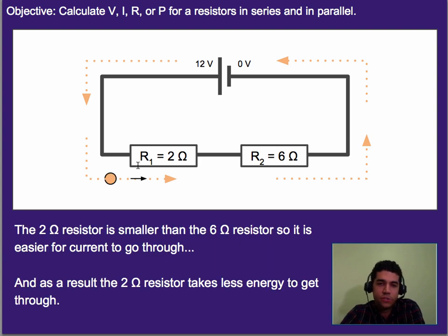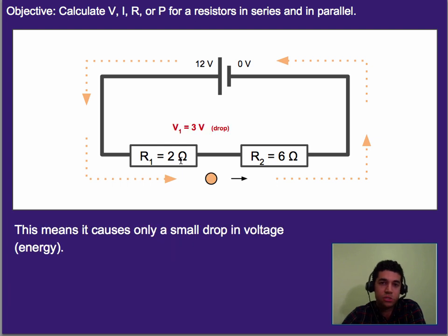So that means as it gets to this first resistor, this resistor is a little bit smaller, so it's got less resistance, and it's going to be easier for the current to go through. Think of it, if it's easier to go through, it's going to require less energy to get through it. Since voltage is basically energy, that means it's going to cause a smaller voltage drop than the bigger resistor. So in this case, it would actually cause a 3 volt voltage drop.